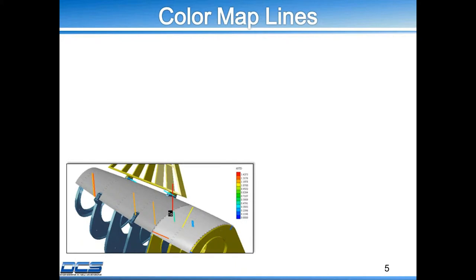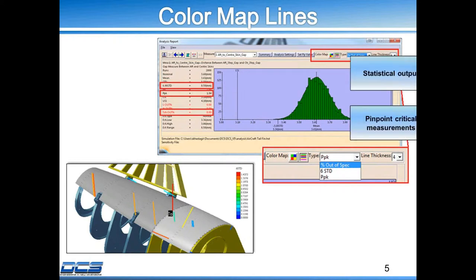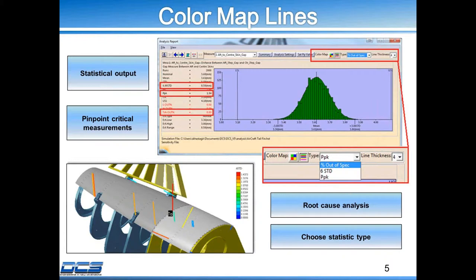I want to touch base on color map lines. Basically, it's the visual representation of all your measures that you have in your model — flush measures, point measures, or gap measures. After you run a simulation, you'll see all the measures, and you can look at them from a six standard deviation view, a PPK value, or a percent out of spec. This really gives you a statistical output analysis. You can pinpoint the critical measures, perform some root cause analysis, find the trouble areas, and fix the design.